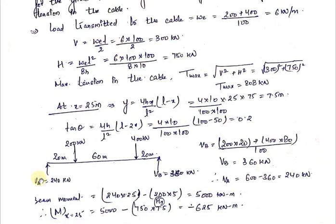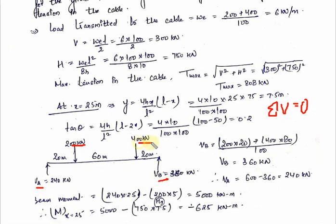Now we need to find the values of VA and VB. The reactions can be found by applying equilibrium equations. Applying summation of vertical forces equal to zero: total upward force = total downward force, so VA + VB = 200 + 400 = 600 kN. This is equation number 1.